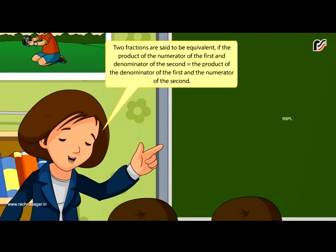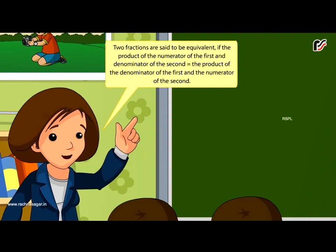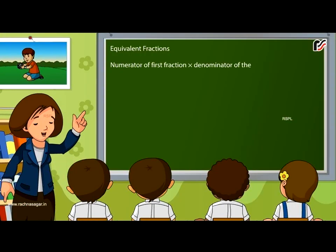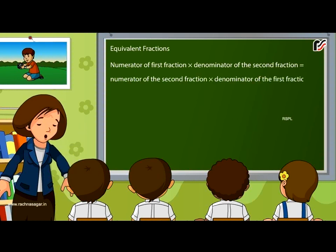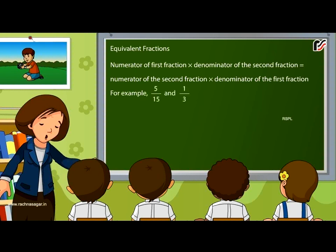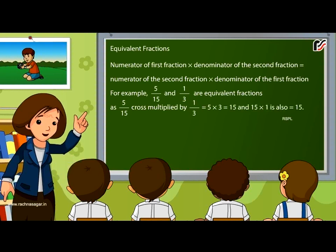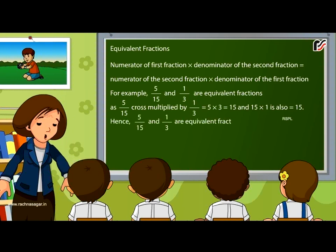Equivalent fractions: two fractions are said to be equivalent if the product of the numerator of the first and denominator of the second is equal to the product of the denominator of the first and the numerator of the second. For example, 5 by 15 and 1 by 3 are equivalent fractions, as 5 into 3 equals 15 and 15 into 1 also equals 15. Hence, 5 by 15 and 1 by 3 are equivalent fractions.